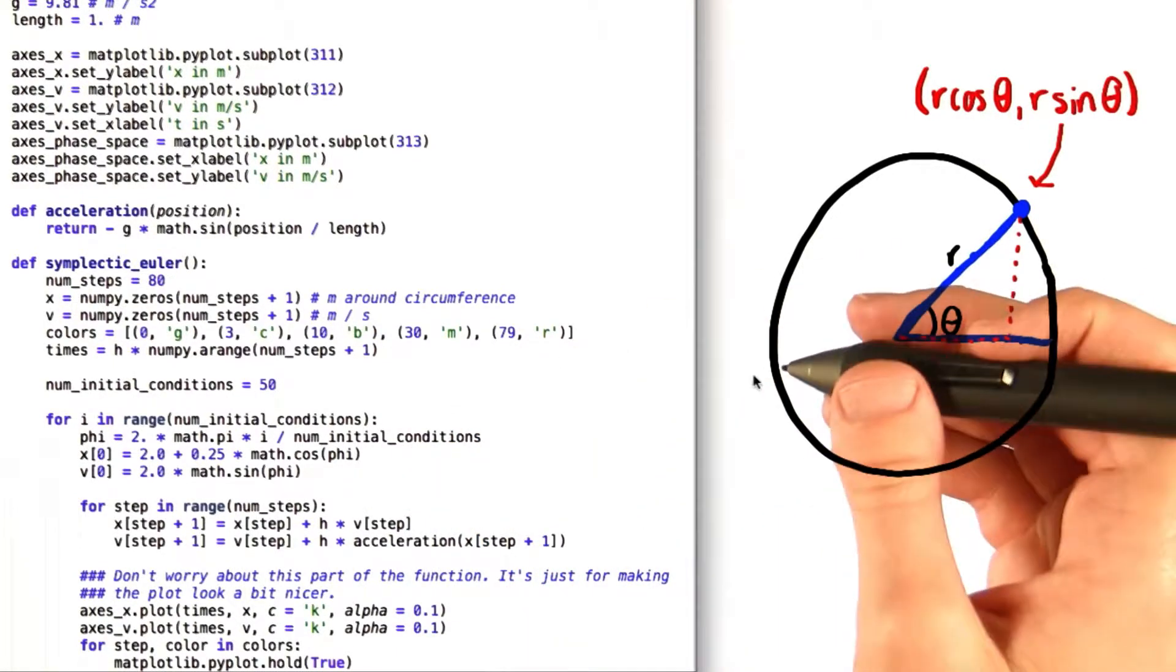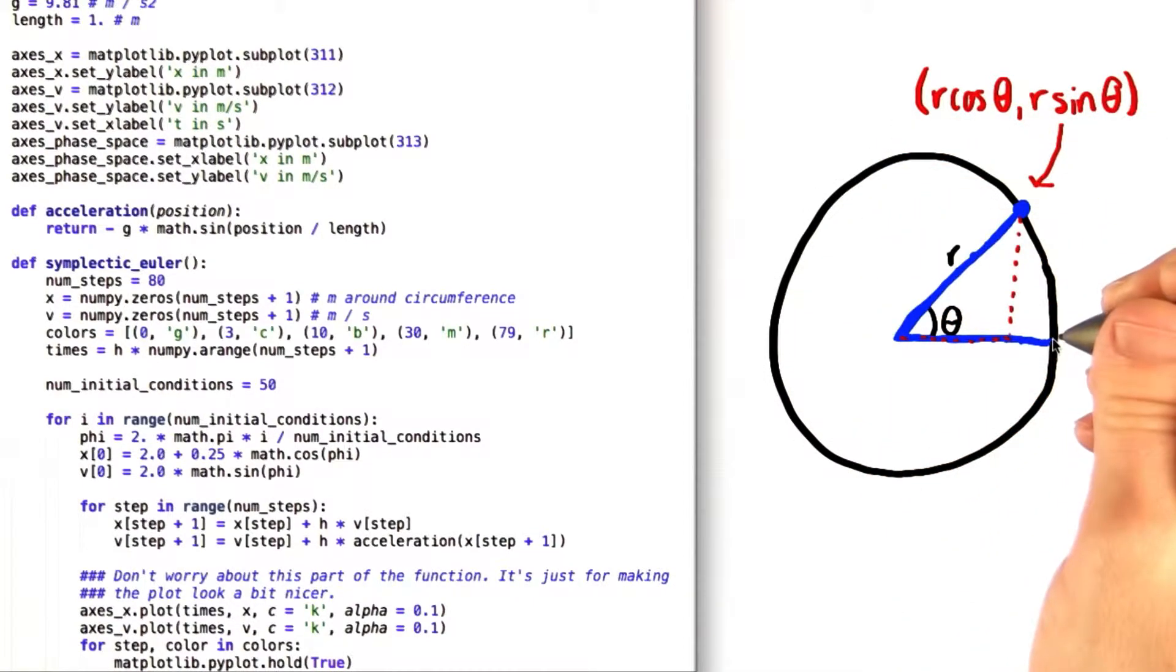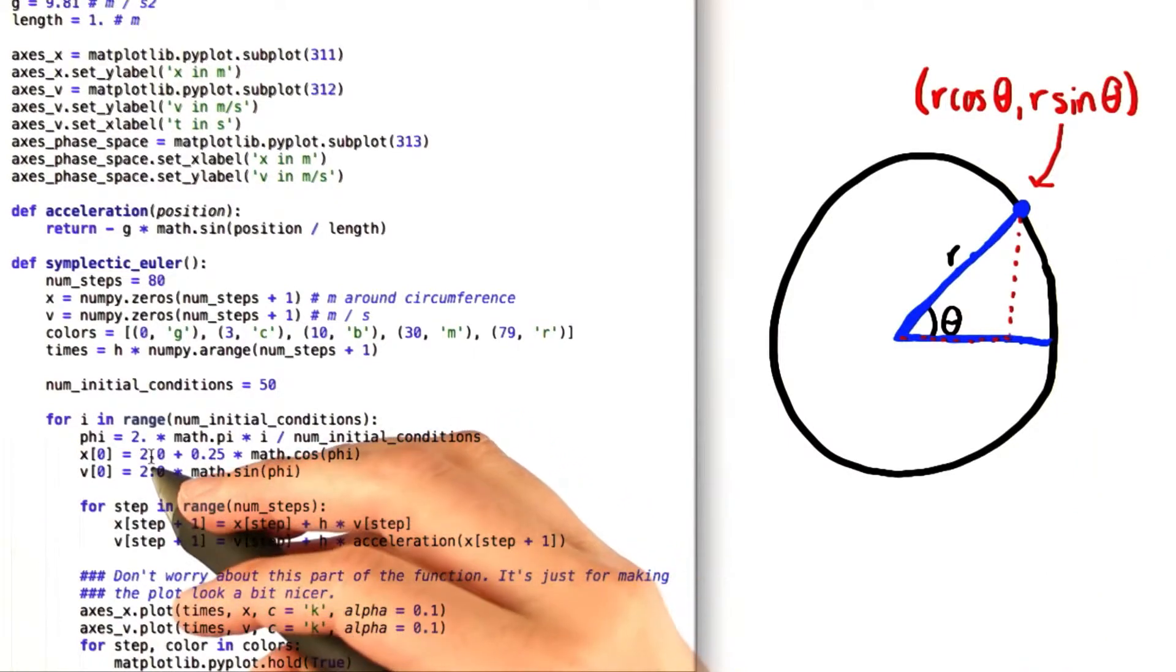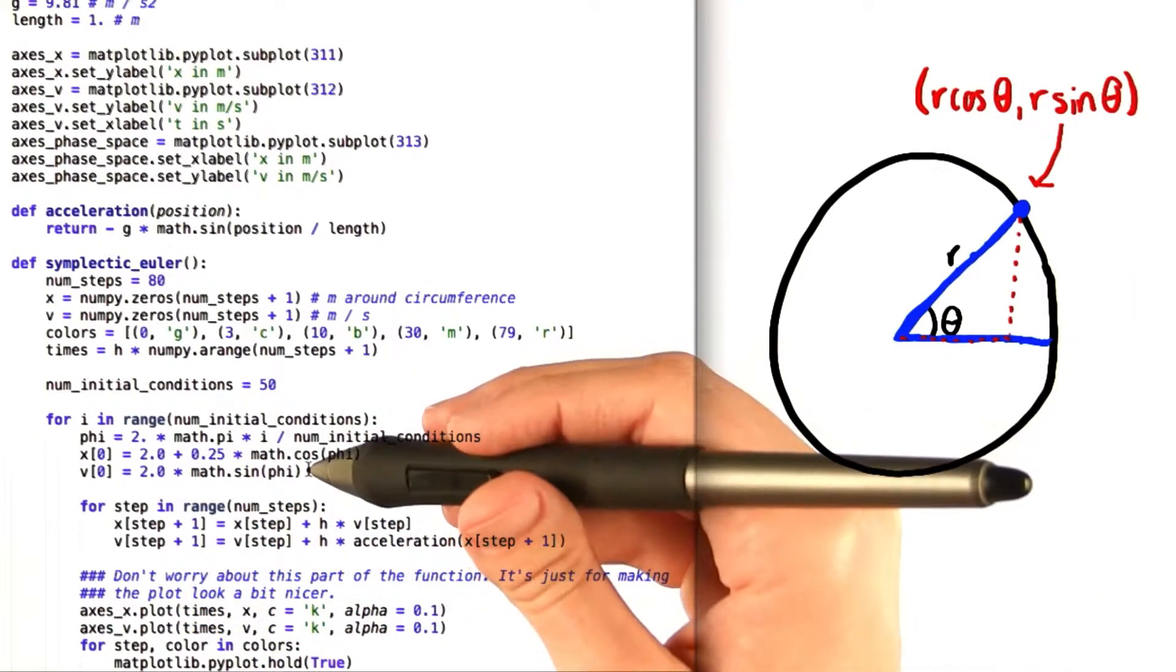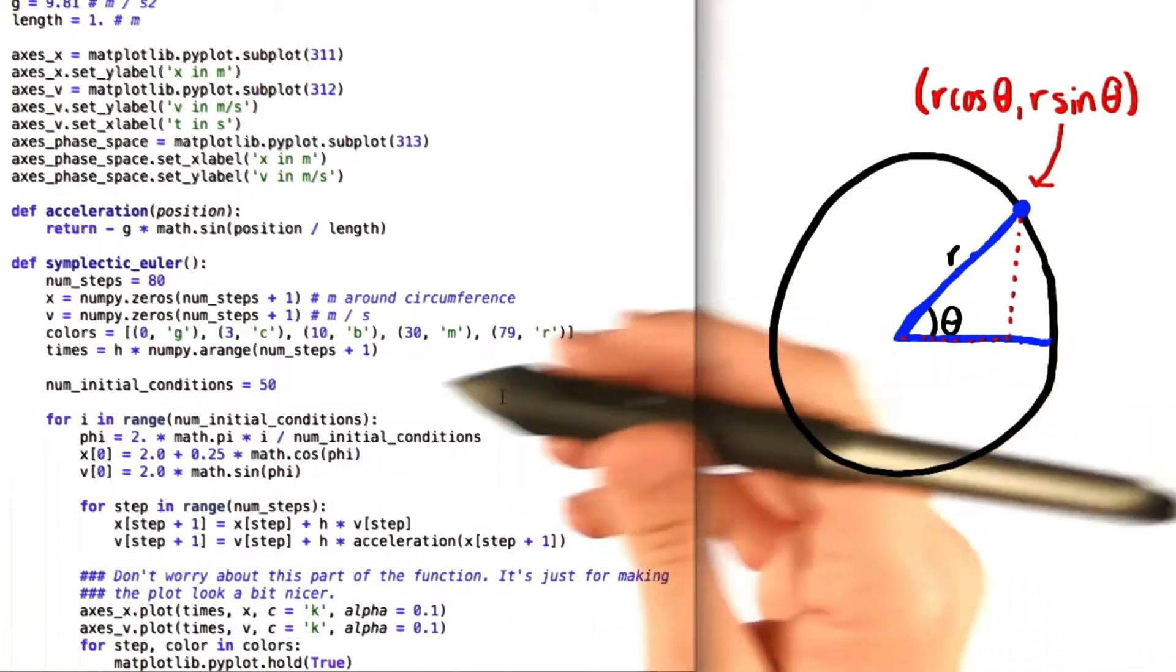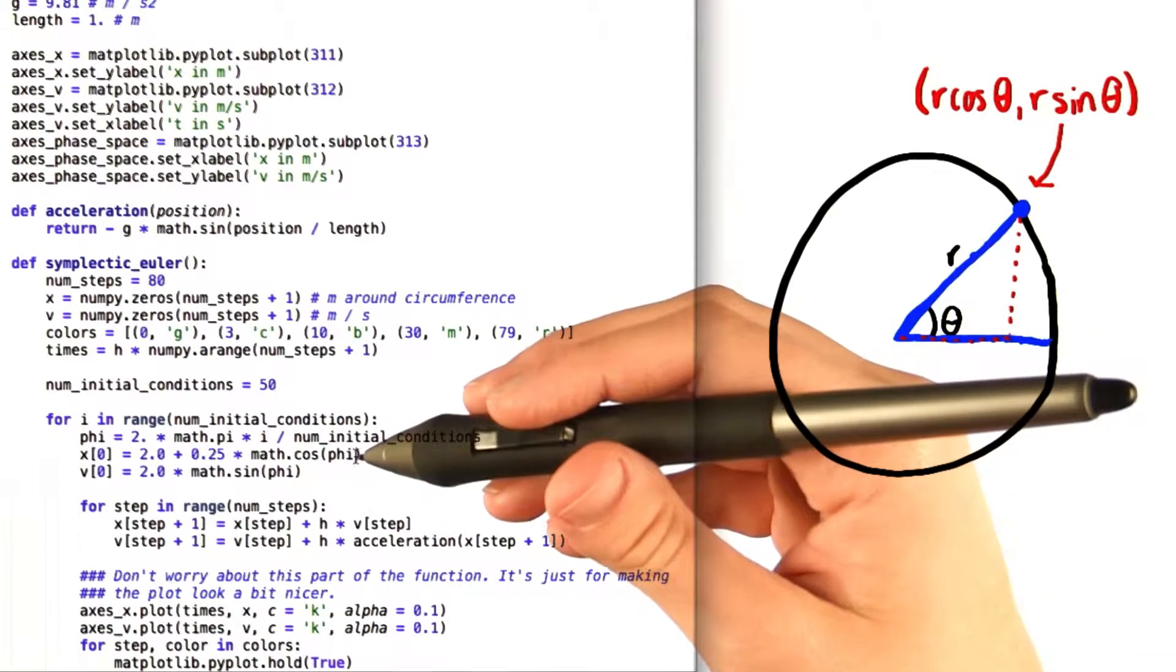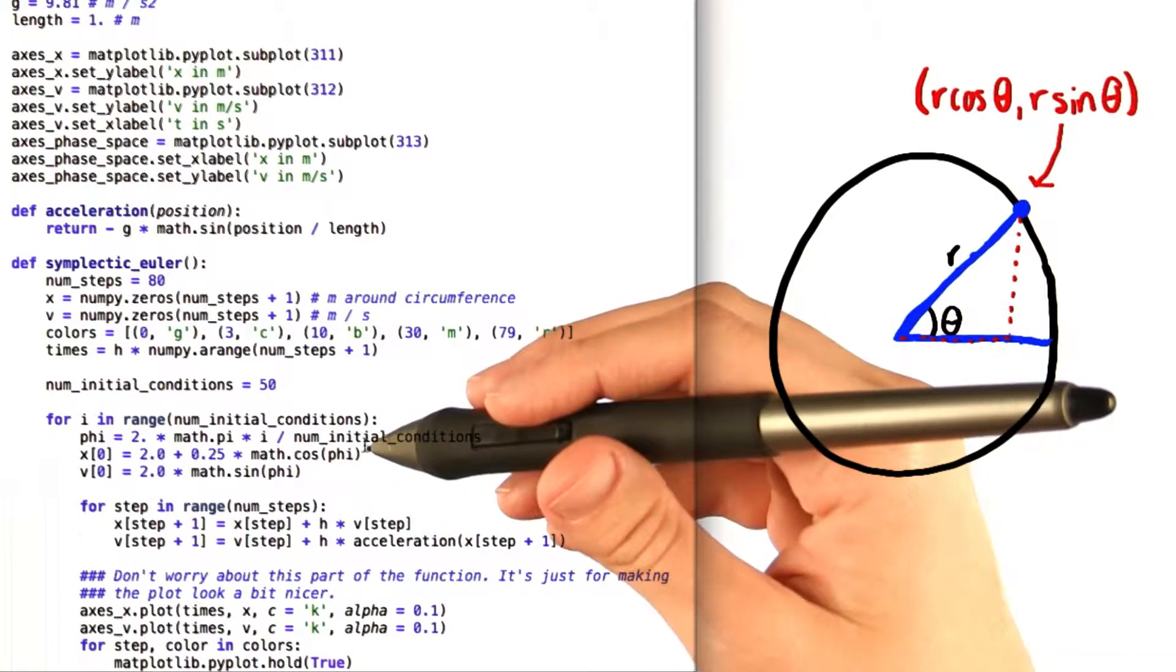Since as you saw in the phase space plot, we had a complete circle of green points, the x values of those green points vary like this, with 2 as the middle value, and the v coordinates vary like this. You notice that the amplitude in either case corresponds to the half length of the green shape in that direction. So actually what we had in the phase space plot was an ellipse for that set of initial conditions.